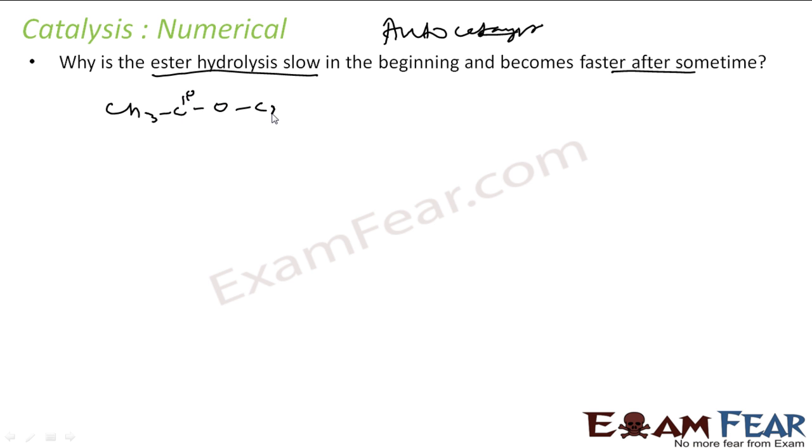In ester hydrolysis, let's suppose we have some ester. Upon hydrolysis, we get H+, CH3COOH, and C2H5OH. If I'm doing hydrolysis of an ester, I'm getting these products. The catalyst I'm using is H+, but the product I'm also getting is H+.